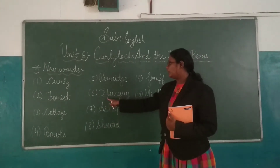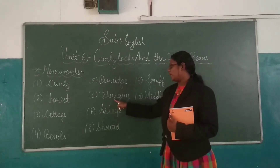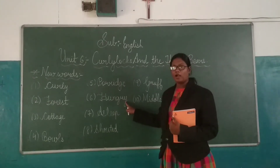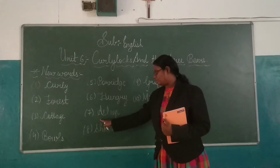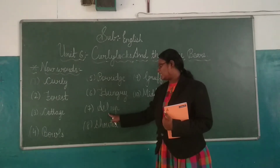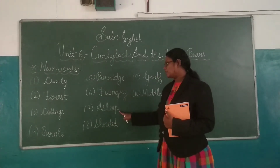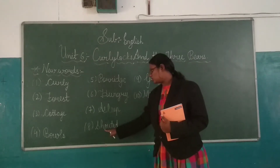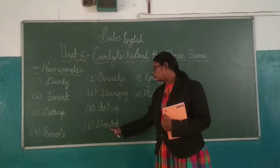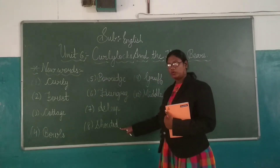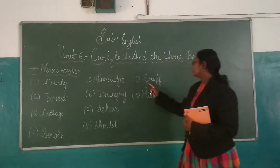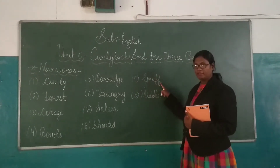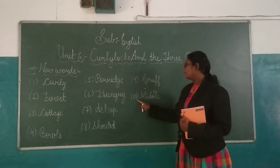Sixth word is Hungry — H-U-N-G-R-Y, Hungry. Seventh is Sleep. Eighth is Shouting — S-H-O-U-T-E-D, Shouting. Ninth word is Gruff — G-R-U-F-F, Gruff.